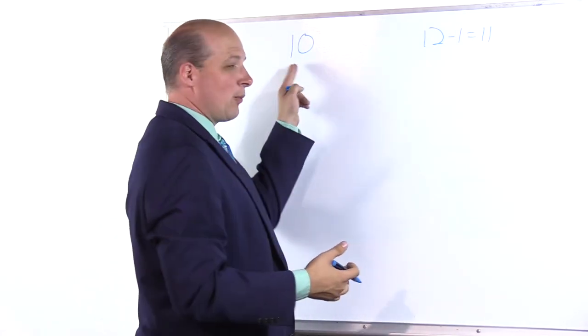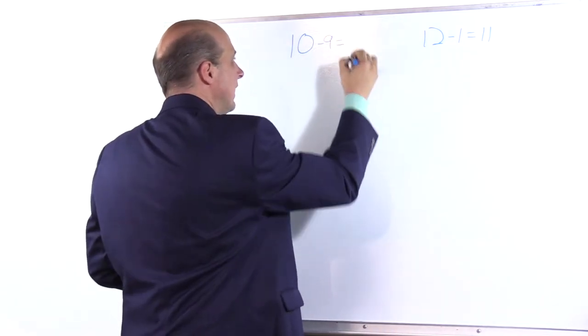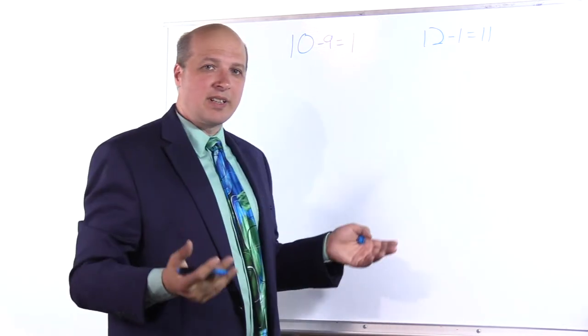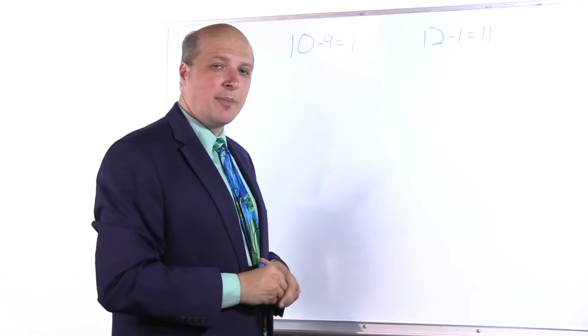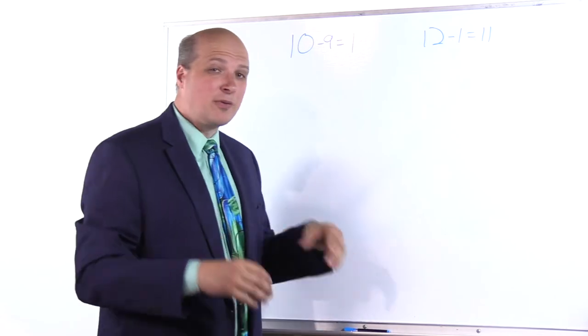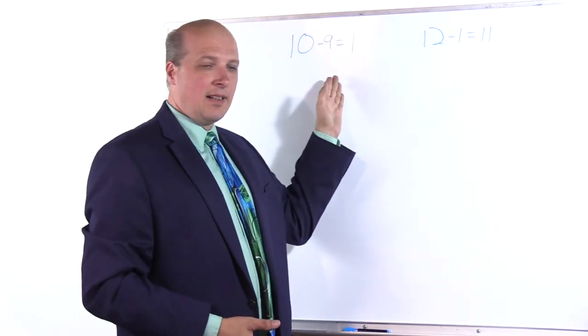Jesus made 12 disciples and he lost one, which he ended up with 11. If we look at what the statistics are today, researchers say that out of 10 people that we bring into the church, we lose nine.